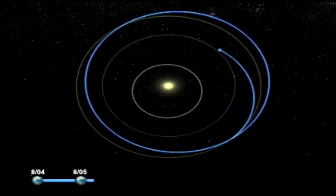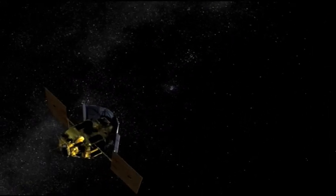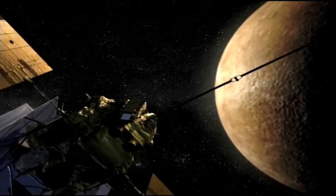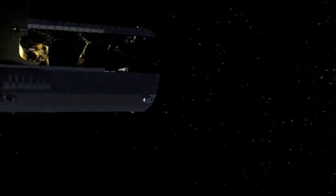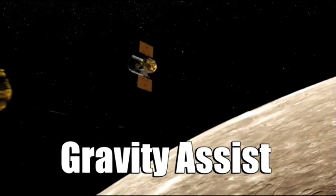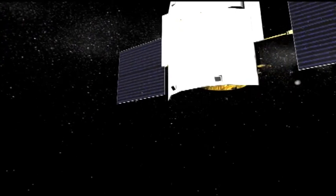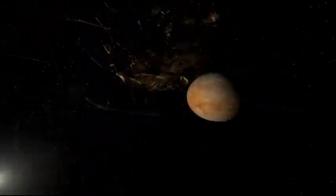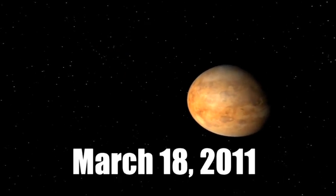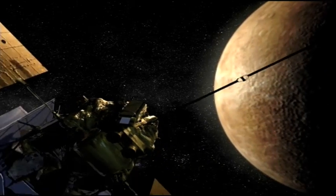To do that, MESSENGER is using a process called orbital insertion. The spacecraft has to slow down enough so that the gravitational pull of Mercury will capture it, pulling the spacecraft into orbit. To help it slow down, MESSENGER uses gravity assist. Gravity from Earth, Venus and Mercury has slowed MESSENGER down during the early stages of its journey. Eventually, in March 2011, with the additional aid of onboard propulsion, it will slow to the point where it will be pulled into orbit around Mercury.